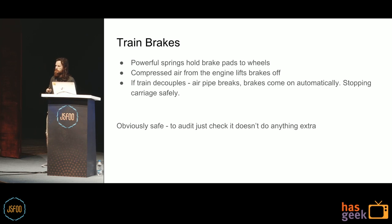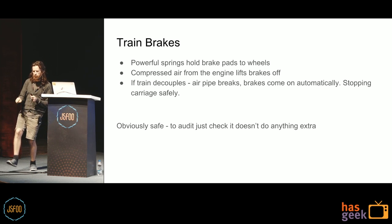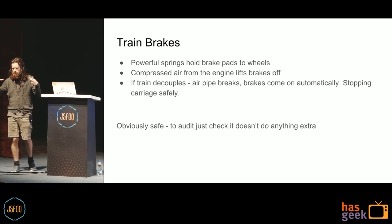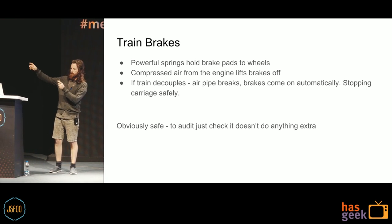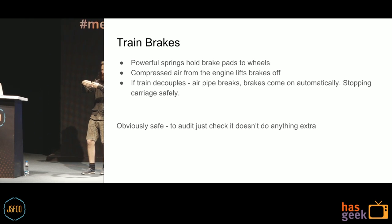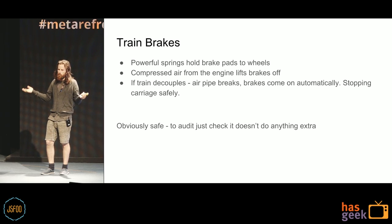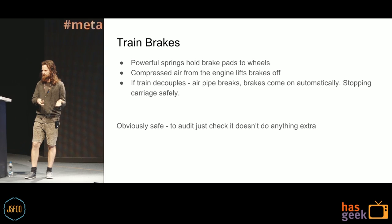An example of this is train brakes. Train brakes have a really interesting design: big springs hold the brakes down onto the wheels by default — the opposite of a bicycle or car where you push to engage brakes. On a train, brakes are engaged by default, and you push a lever to release them to start moving. That lever is controlled by compressed air generated in the engine coming down a pipe. If the train becomes decoupled, the pipe breaks, the rest of the train has no air, so the brakes come on and it safely stops. It's obviously safe — to verify it, you just check that nothing extra is holding the brakes open.